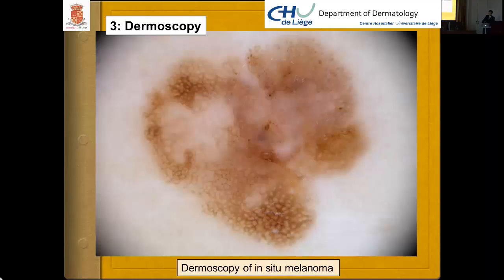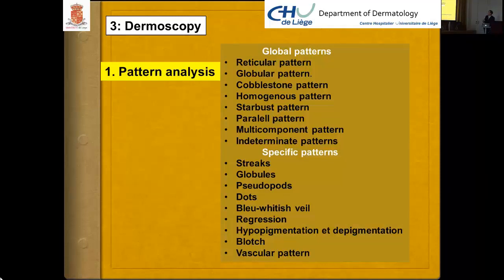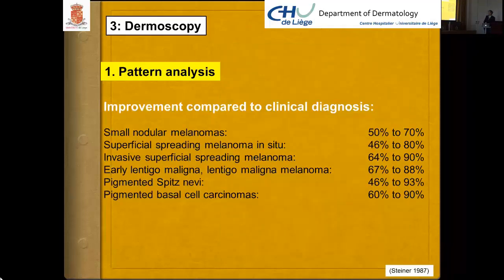Using dermoscopy, several scoring systems have been developed: pattern analysis (the first, most difficult to use), ABCD dermoscopic score, three-point analysis, seven-point analysis, and Menzies' method. Pattern analysis has already evidenced improvement in clinical diagnosis — for small nodular melanomas, sensitivity increases from 30% to 70%. Early detection in lentigo maligna and invasive superficial spreading melanoma also improves, though it is difficult to learn and requires considerable experience.